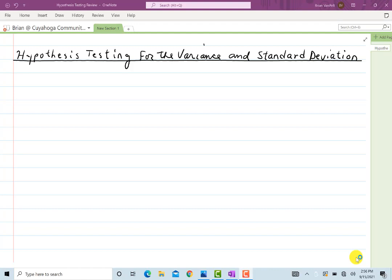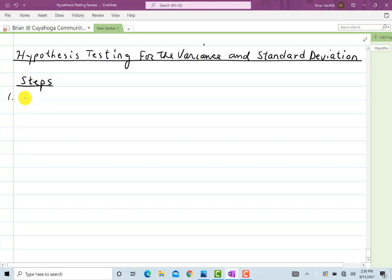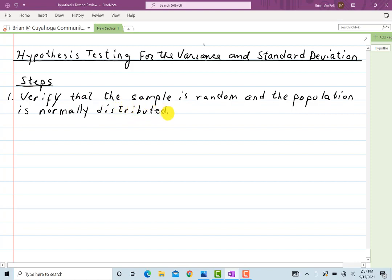Let me write down the steps. Step one, verify that the sample is random and the population is normally distributed. These things will all be assumed in the examples I do so I won't bother with those but in general you got to keep your eyes out for something like that.